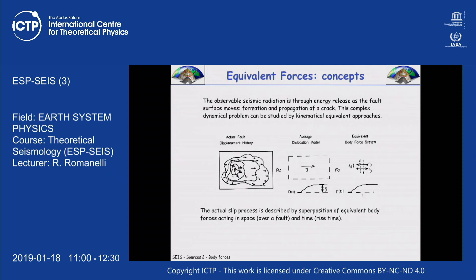We're going to take a simpler route towards the source description. It's simple because now we have just one arrow and we can place it in a point. But what we have lost now is the rupture time. Please remember this. The only kinematic parameter that is left is the time necessary for the slip to occur — just one — and it's going to be called rise time. It's the time necessary for the whole system to move, and it should be much shorter than what we have lost.